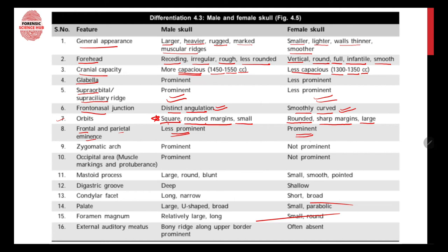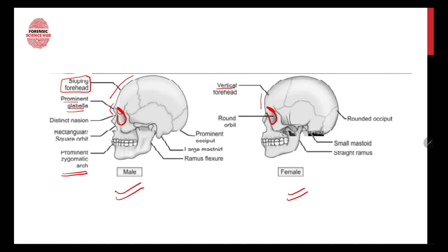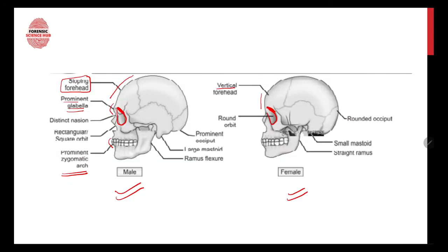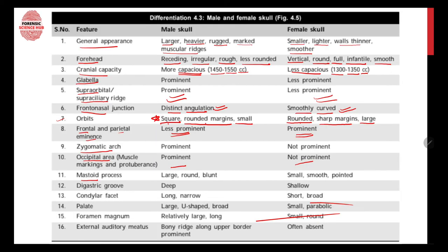The frontal and parietal eminence is less prominent in males and more prominent in females. The zygomatic arch is prominent in males and not so prominent in females. The occipital area — the occipital bone at the back — is prominent in males and not so prominent in females. This is the frontal bone, parietal bone, and occipital bone visible in the image.